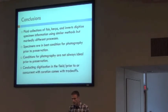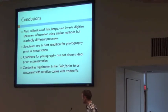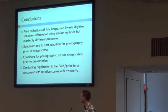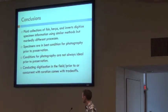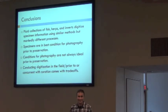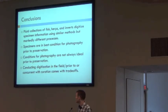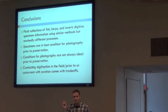So what can we conclude? Fluid collections of fish, herps, and inverts digitize specimen information using similar methods but markedly different processes, at least at the University of Florida's Museum of Natural History. Specimens are in the best condition for photography prior to preservation — no surprise there. But conditions for photography are not always ideal prior to preservation, and this is the trade-off that we all struggle with. The photographs are fantastic, and it's through images that we often convince the public that the organisms we study are worthy to study. Conducting digitization in the field prior to or concurrent with curation comes with trade-offs. Thank you.